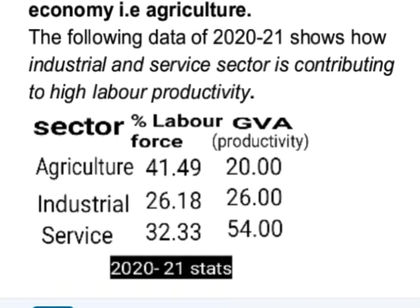This table shows the percentage of labor force and productivity in terms of GVA (Gross Value Added) in different sectors. In agriculture, approximately 41% of India's labor force is employed but it contributes to only 20% of India's GVA. In the industrial sector, 26% of labor force contributes to 26% of GVA. In the service sector, just 32% of labor force contributes far more, i.e., 54% of GVA.